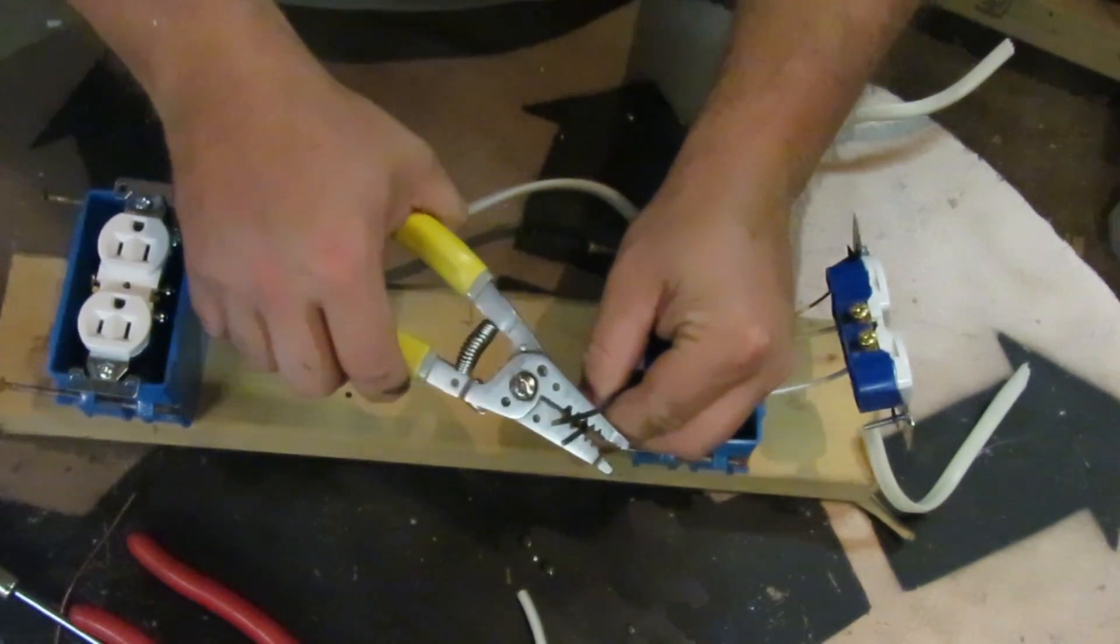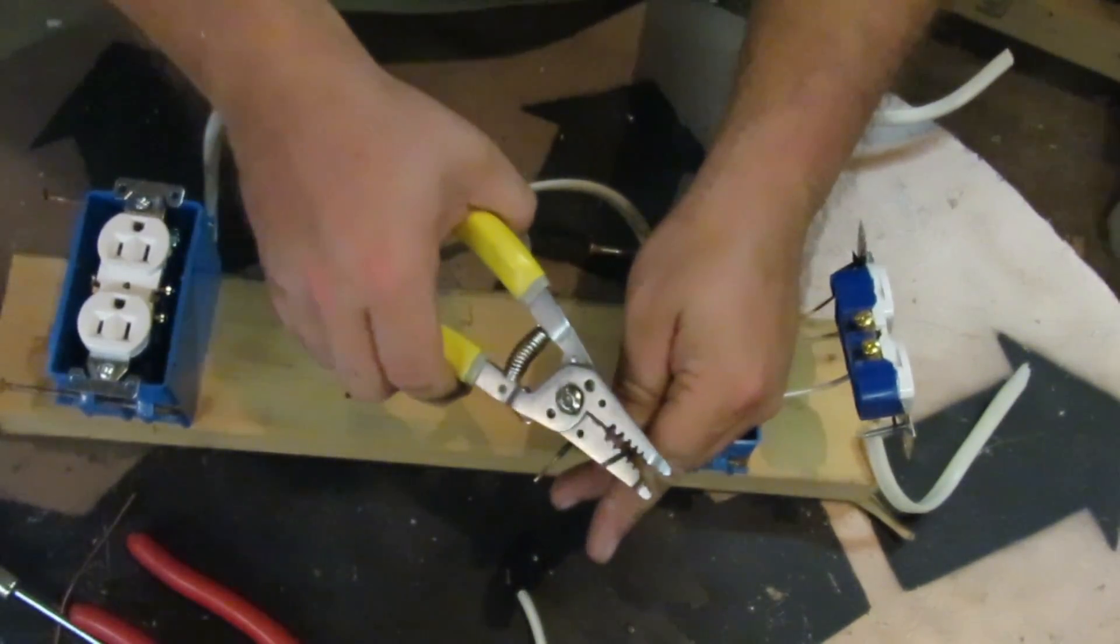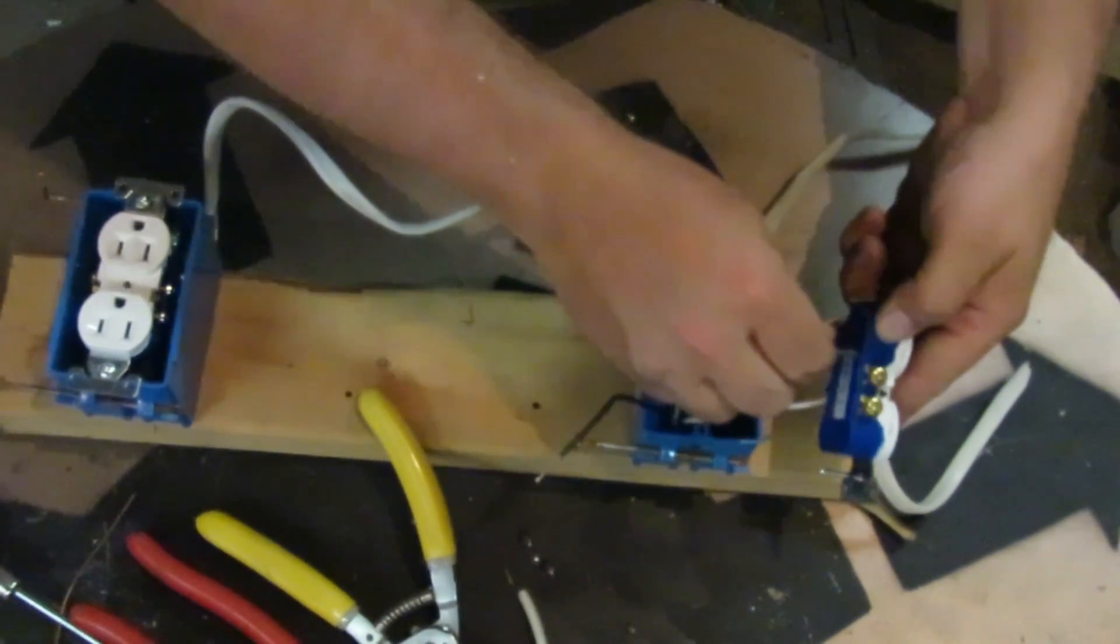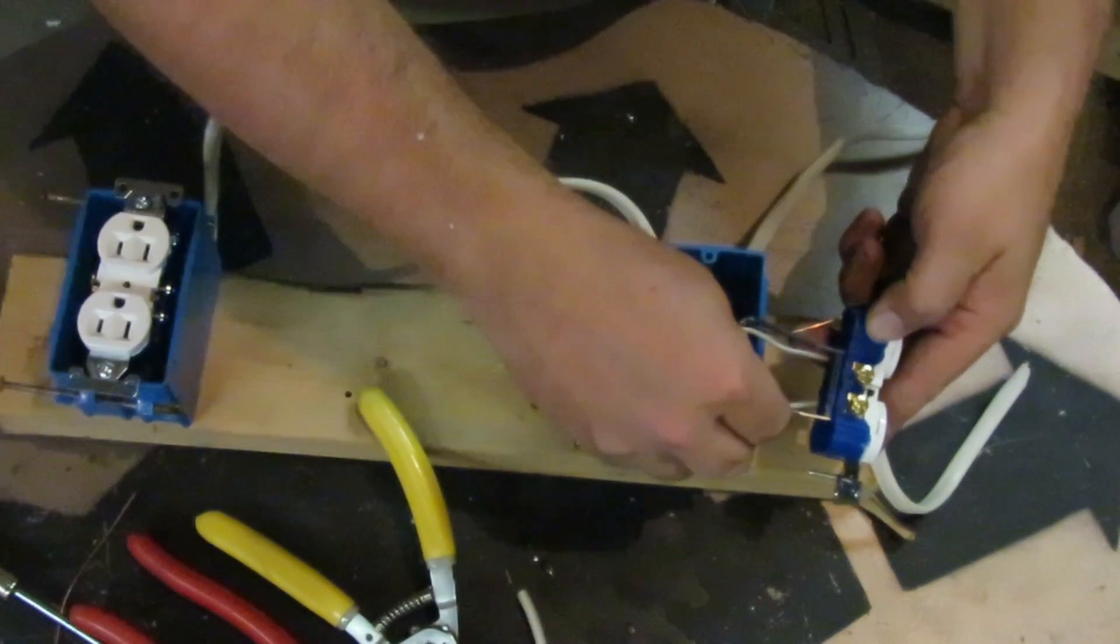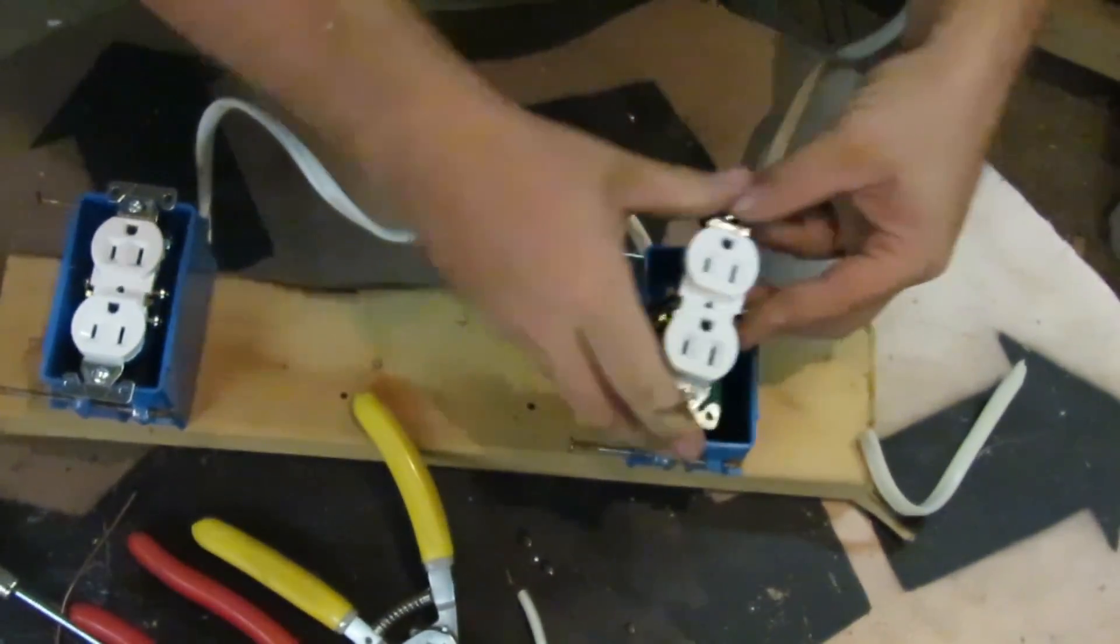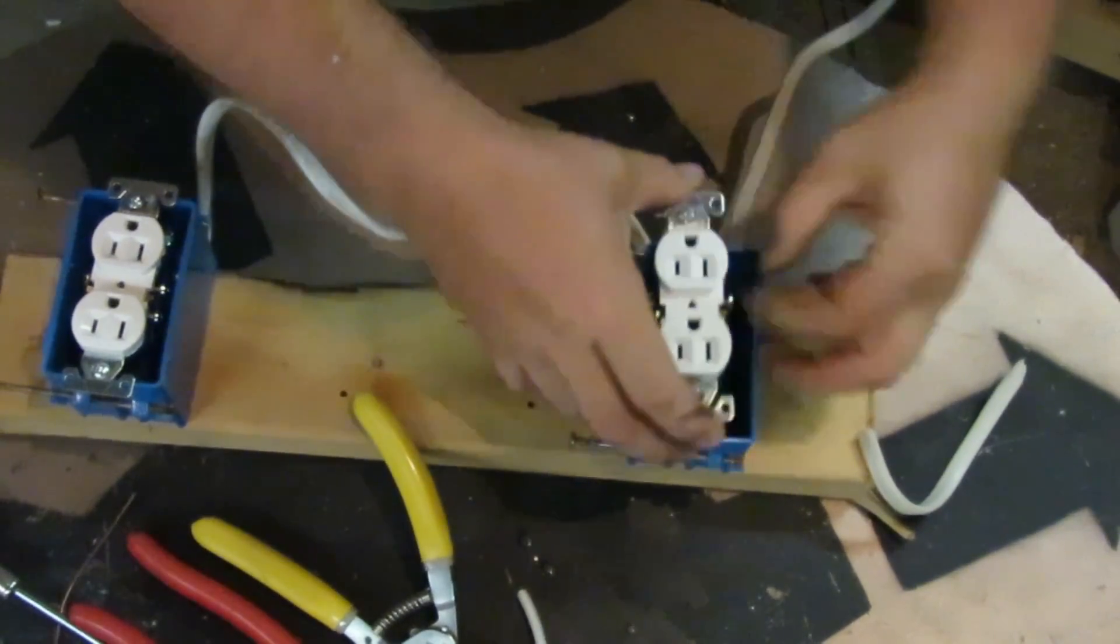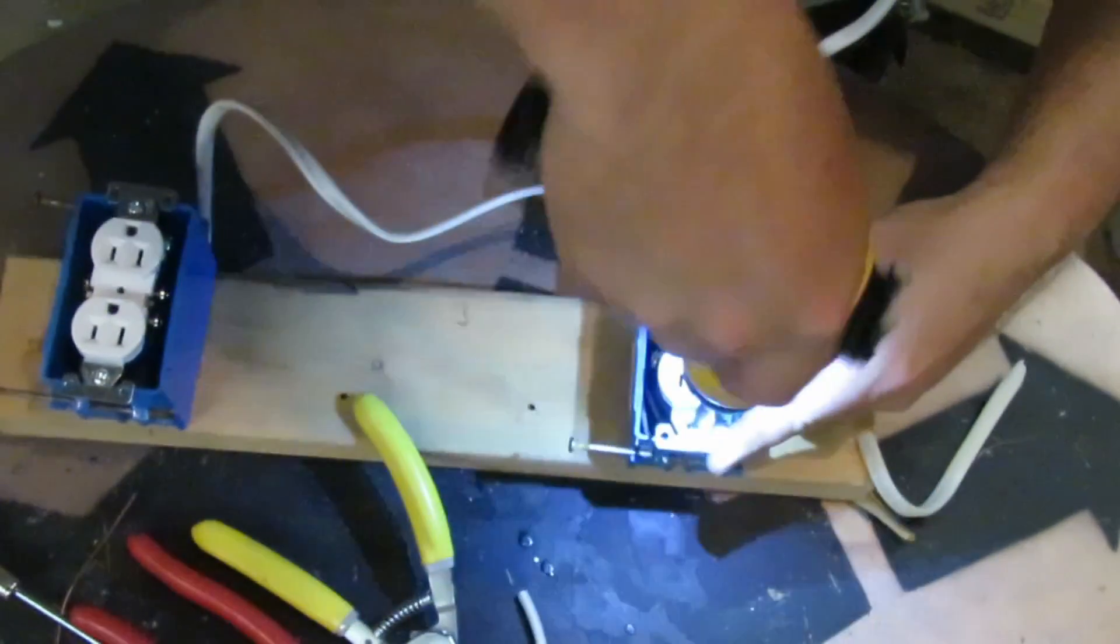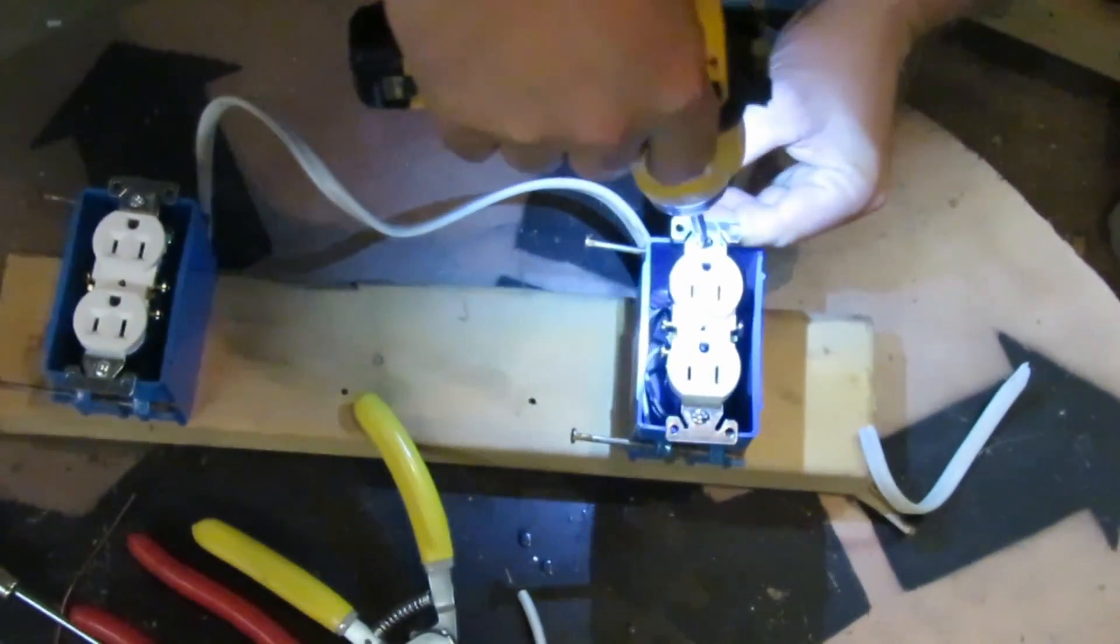And then strip off your black wires. And your black wires always go under the brass colored screws. And here I'm just pushing them both in the back. I'm stuffing the receptacle into the box, screwing the receptacle into the box, and then I'm done. And that's all there is to it.